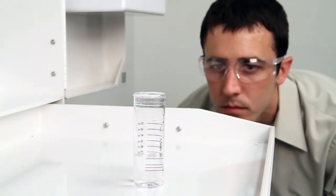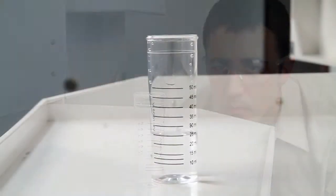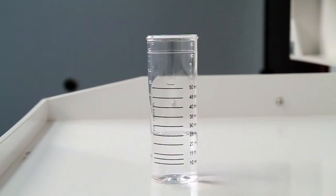When performing a drop count titration, a white background can provide contrast to better see the color changes. A cabinet tray or a white paper towel can provide that contrast.